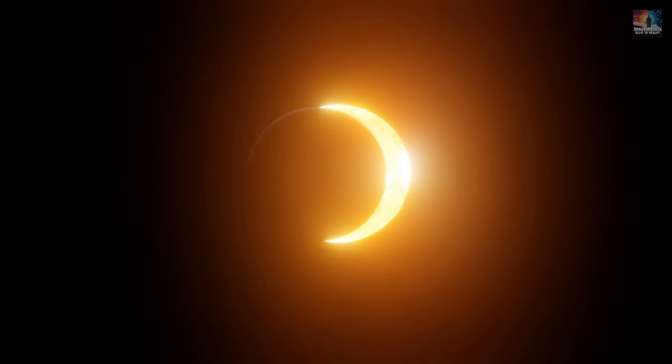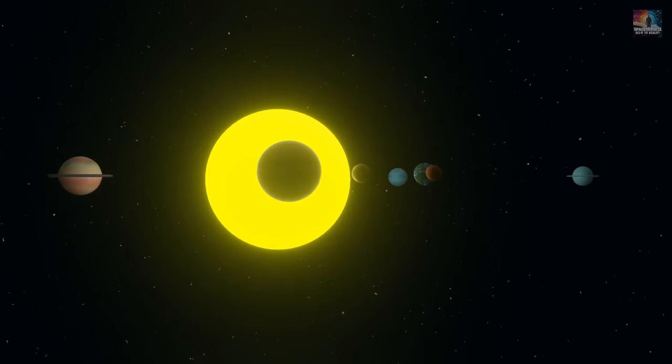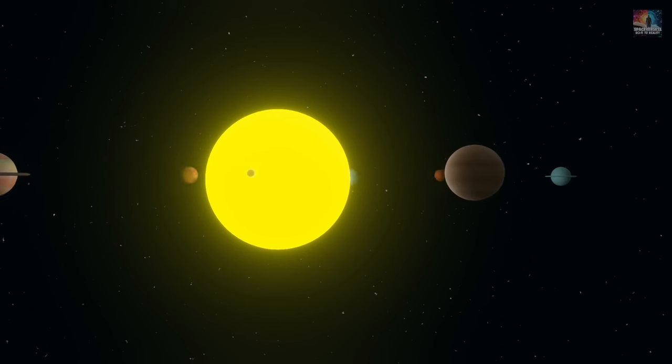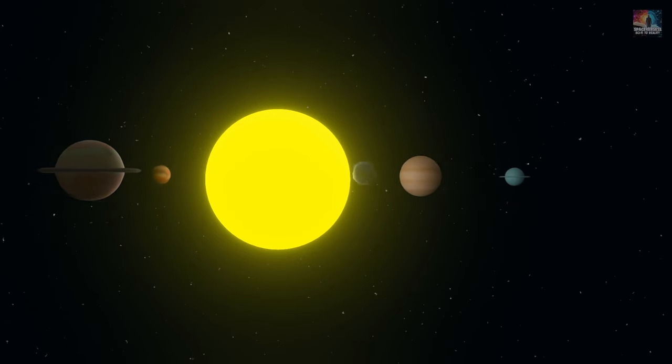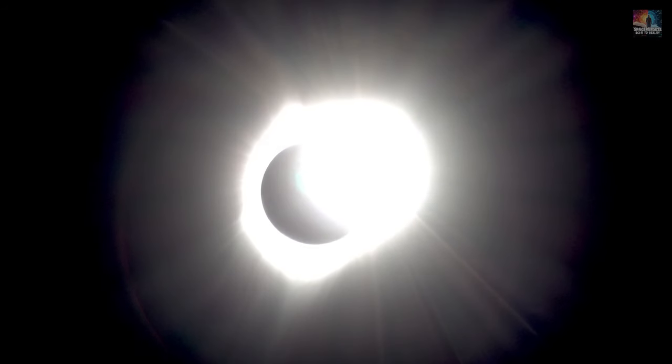Now why does this matter practically? Well, think about something called the Lagrange points. These are special spots in a two-body system, like the Earth and the Sun, where a smaller object can kind of hang out without getting pulled away. These points pop up because there's a balance between the gravity of the big bodies and the centrifugal force pushing on the smaller one. So even though it might seem complicated, we see examples of the three-body problem in everyday things like solar eclipses, and understanding these concepts helps us make sense of how stuff moves around in space.